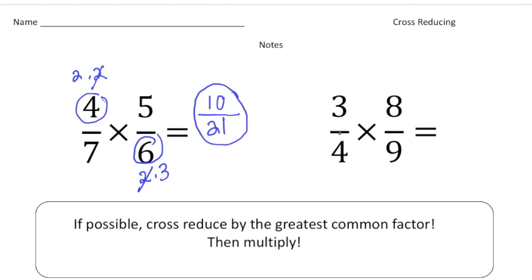Let's take a look at this next one. Here we can actually cross reduce twice. We have 3 and 9, so I can reduce 3 and 9. I can make this a 1 and make this a 3, because 3 goes into 3 once and 3 goes into 9 three times. I can also reduce the 8 and the 4, because the greatest common factor of 8 and 4 is 4. So 4 goes into 4 once and 4 goes into 8 twice.